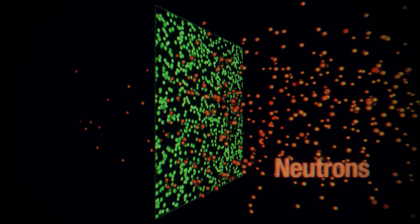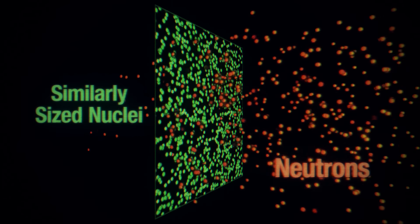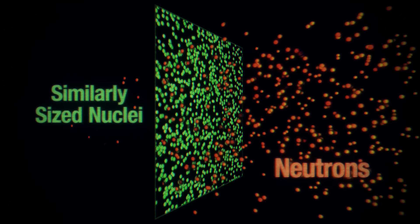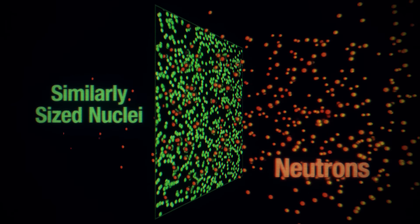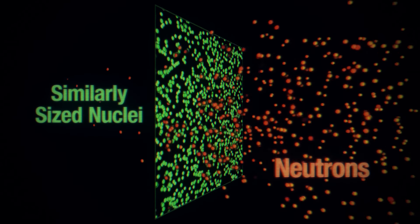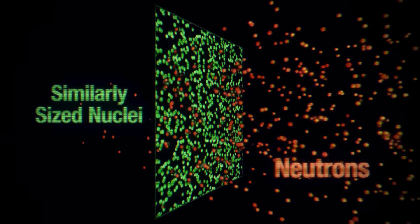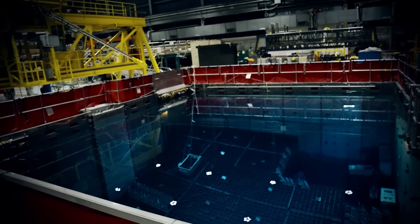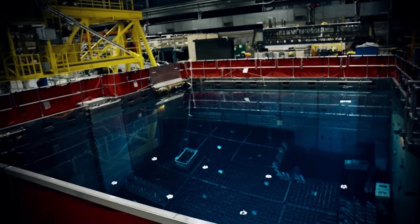Instead, for neutrons, you need to stop them with similarly sized nuclei. You need to take advantage of the conservation of momentum and smack them into other stuff, like smacking billiard balls together. And guess what has a similar mass as a neutron, and therefore makes a good shield? Hydrogen. That's why you'll see water in a spent nuclear fuel pool, and not an equal amount of lead.